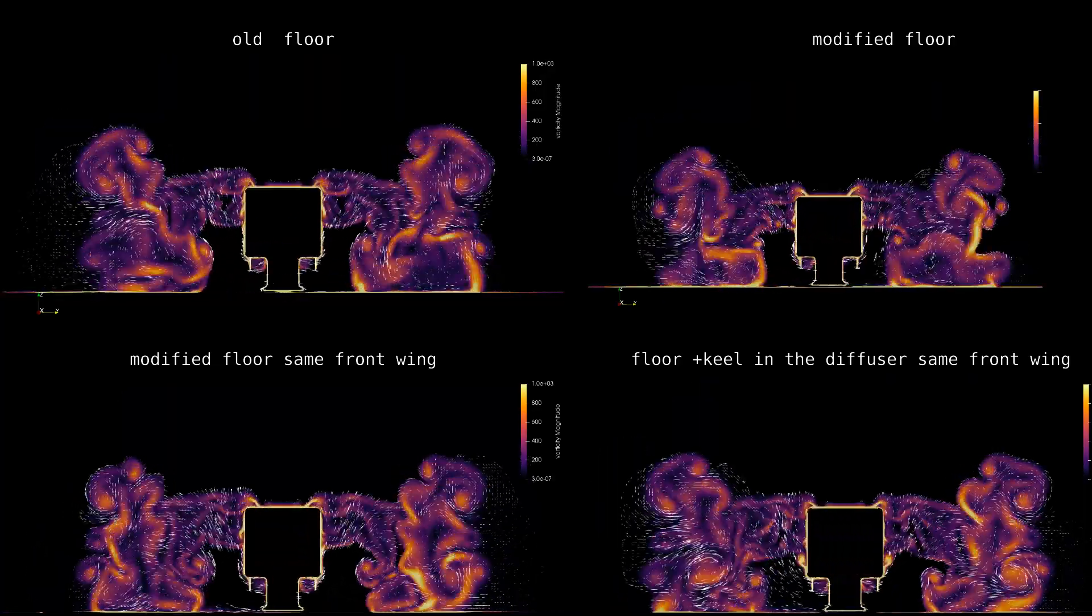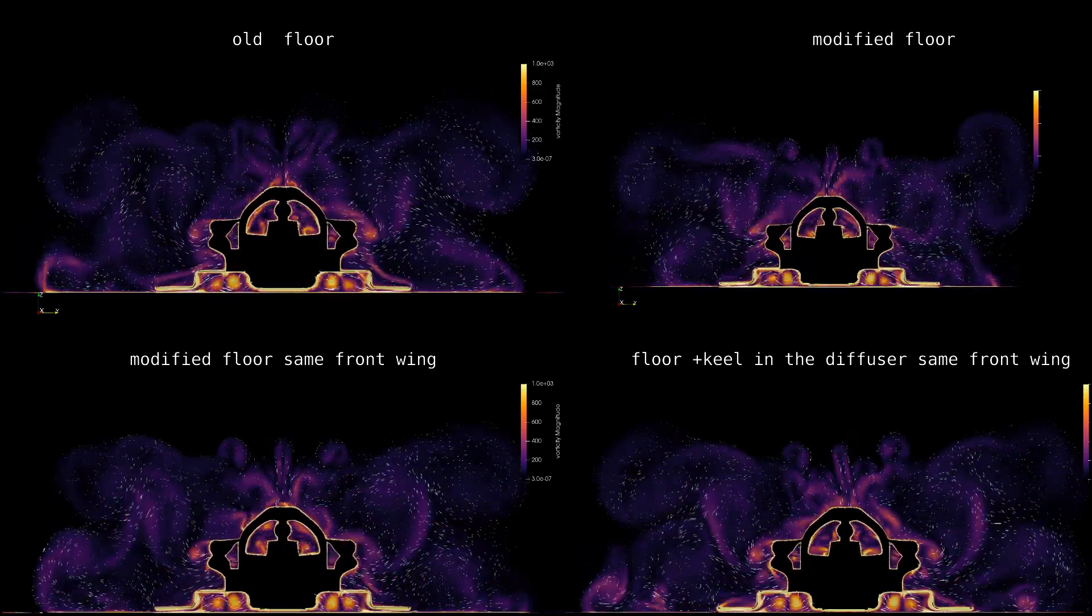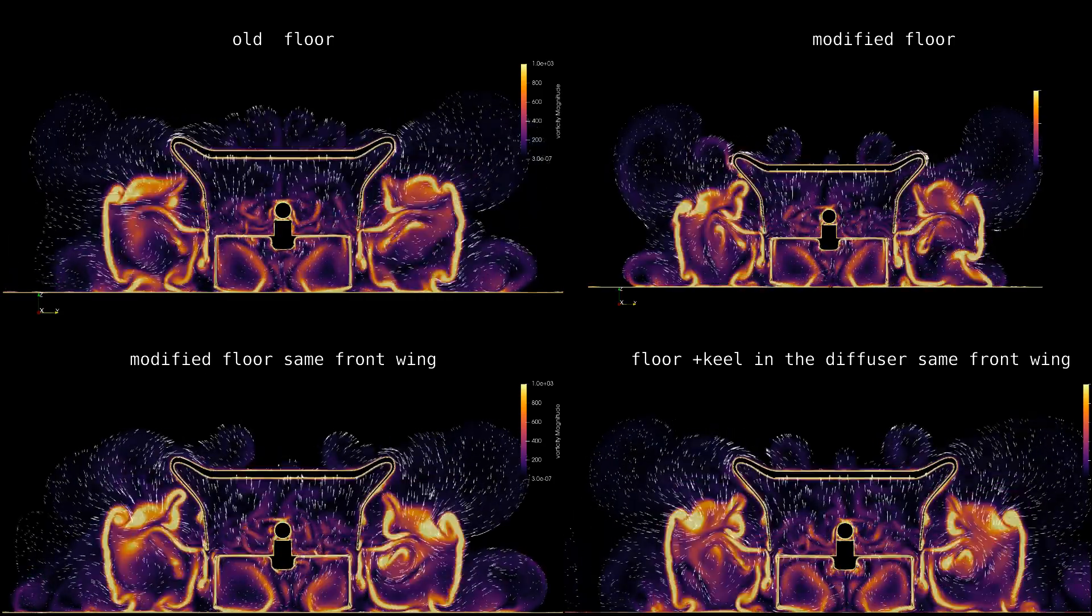Basically, the reasoning for the porpoising and bouncing we saw last year, and also my uninformed idea as to why the Red Bulls are quick, is because of the maintenance of these structures.